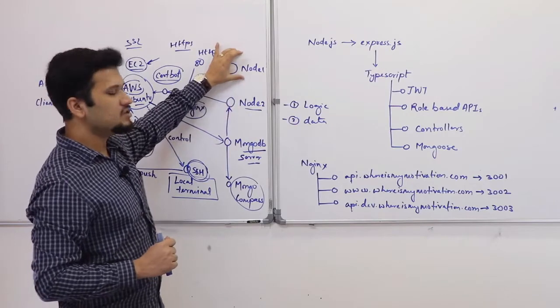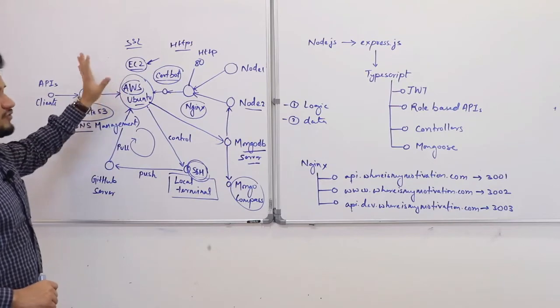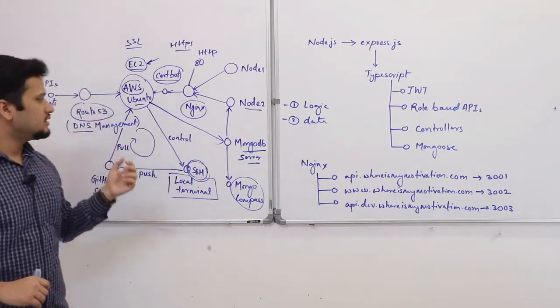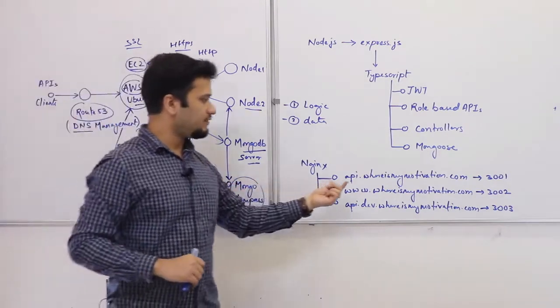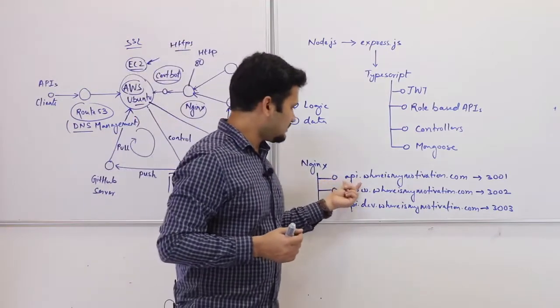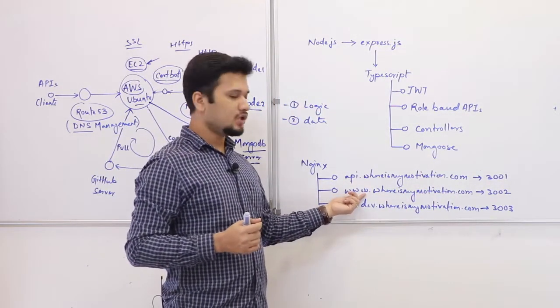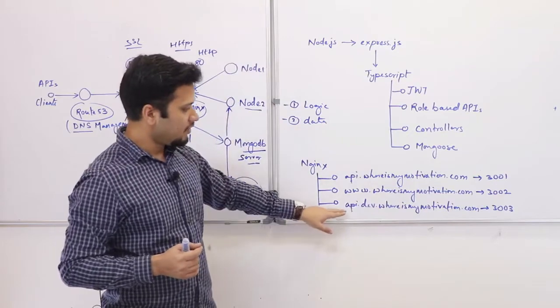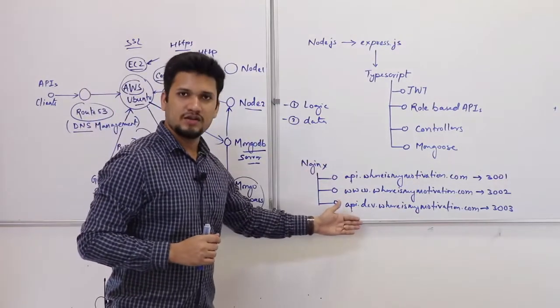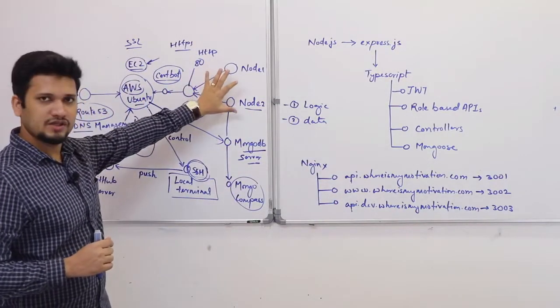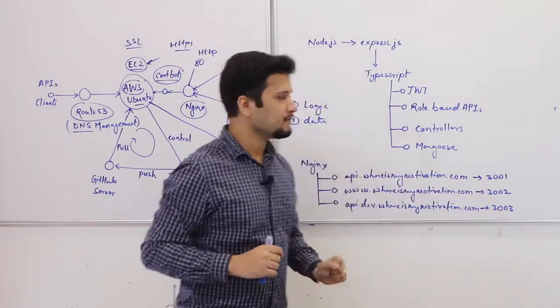Now, we can have multiple instances of Node.js. Why I need that? For example, I am using AWS free tier, so that I can use this single machine to serve various services. For example, we have got our backend APIs at api.wheresmymotivation.com. We can have our website as www.wheresmymotivation.com. We can have our development server at api.dev.wheresmymotivation.com. All these three servers can be running on the same machine. They will be running on different ports. For example, 3001, 2, and 3.